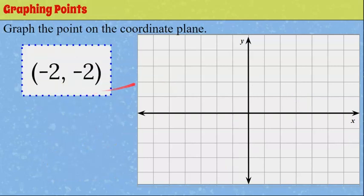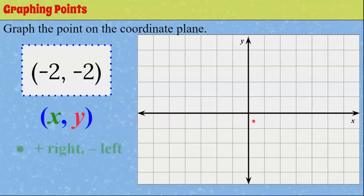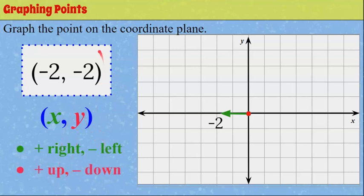Now let's talk about graphing a point. I've given you the ordered pair, the location of the point on the coordinate plane. Start at the origin, go in the x direction first — left or right — then the y direction. Our x is negative two, so we go left: one, two — to negative two on the horizontal x-axis. Then y is negative two, so we go down: one, two — negative two. And there is our point. Left negative two, down negative two — plot your point starting at the origin.